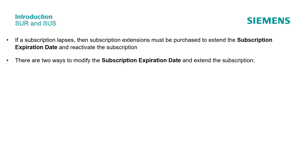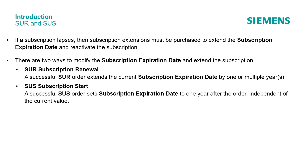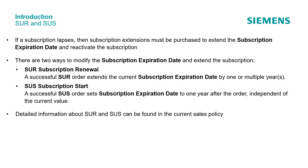There are two ways to modify the subscription expiration date and extend the subscription. The SUOR, subscription renewal: a successful SUOR order extends the current subscription expiration date by one or multiple years. Or the SUS, subscription start: a successful SUS order sets the subscription expiration date to one year after the order, independent of the current value. Detailed information about SUOR and SUS can be found in the current sales policy.